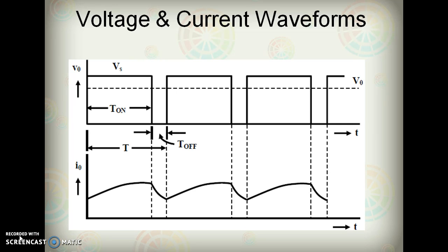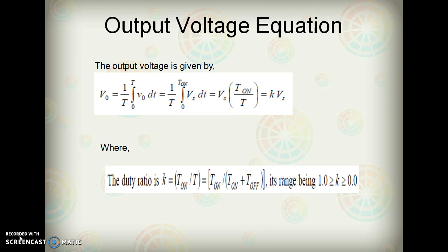The frequency F is equal to the inverse of the total time period T. The average value of the output voltage equation is given as V0 equals 1/T times the integral from 0 to T of V(t) dt, which can be written as Vs times T_ON divided by T, which equals K times Vs. So the output voltage V0 is equal to K times Vs, where K is the duty ratio lying between 0 and 1, and it is equivalent to T_ON divided by T.